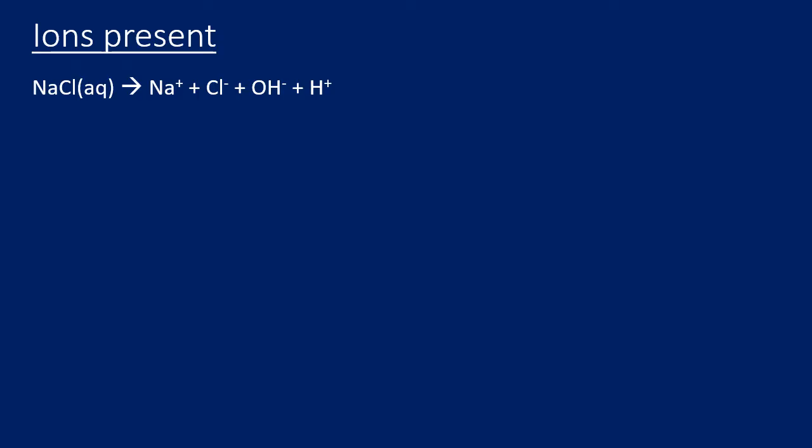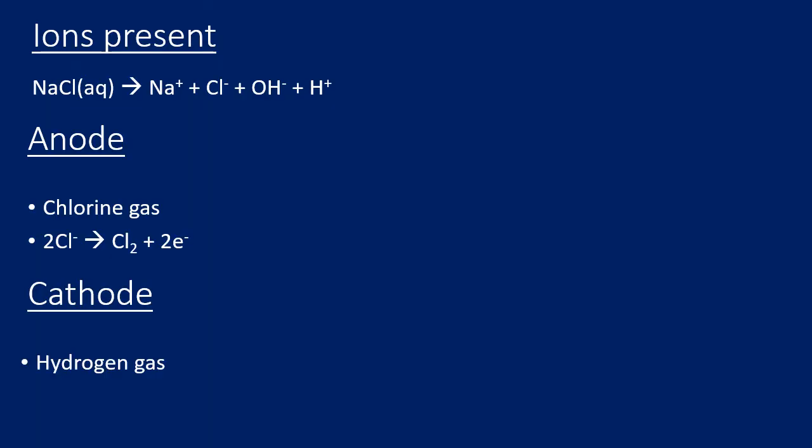What's happening at the anode? At the anode, we'll be making chlorine gas. Two chloride ions become chlorine and two electrons: 2Cl⁻ → Cl₂ + 2e⁻. Electrons are lost at the anode. At the cathode, hydrogen gas is produced: 2H⁺ + 2e⁻ → H₂. So hydrogen gas is formed with a gain of electrons at the cathode.